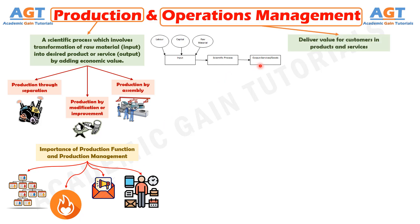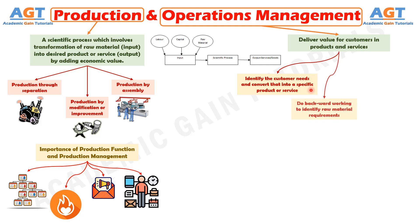Now, when we discuss operations management — to deliver value for customers in products and services, it is essential for the company to do the following: Number 1, identify the customer needs and convert that into a specific product or service, which includes the number of products required for a specific period of time. Number 2, based on product requirement, do backward working to identify raw material requirements. And number 3, engage internal and external vendors to create the supply chain for raw material and finished goods between the vendor, the production facility, and the customers. Operations management captures these three identified points.